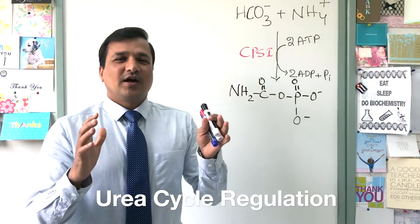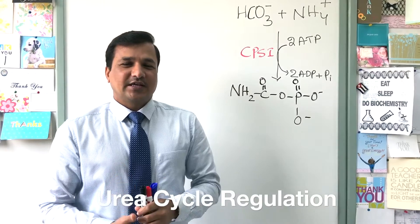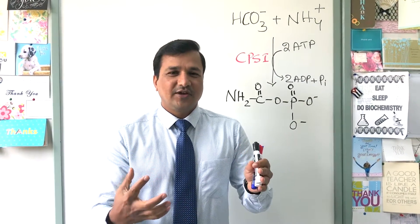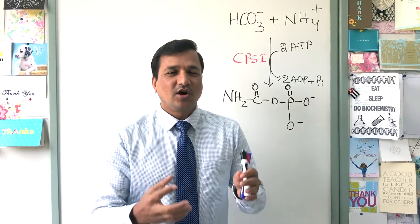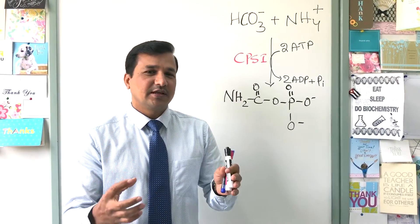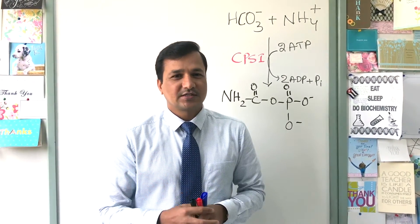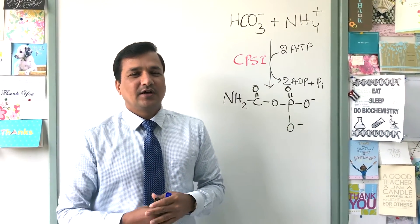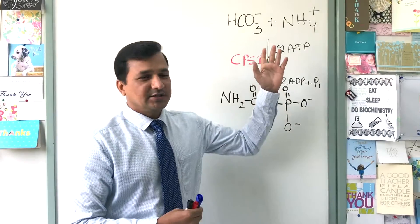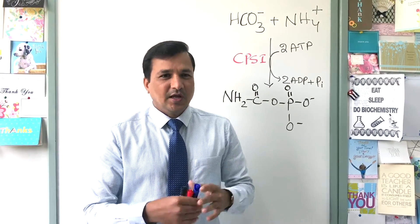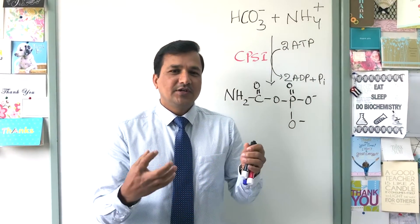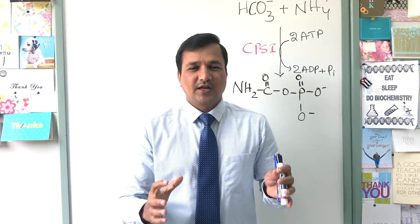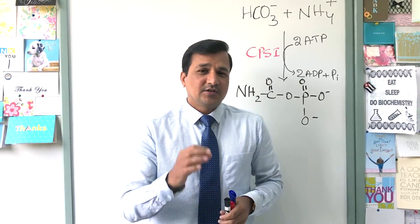I have already explained the urea cycle reactions — there are five reactions in total. All those reactions and the important points about them I have already explained, and you can watch that video in the link appearing in the upper right corner right now. Now let me explain how the urea cycle is regulated and which is the major enzyme in its regulation.